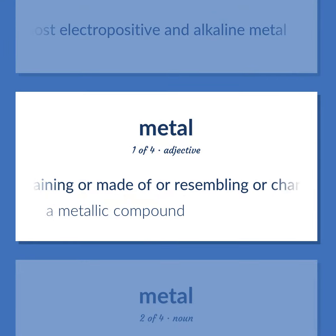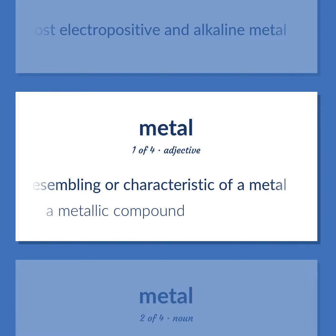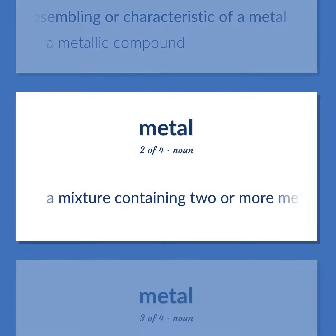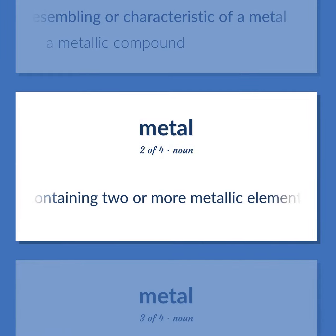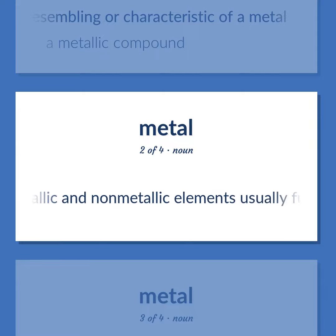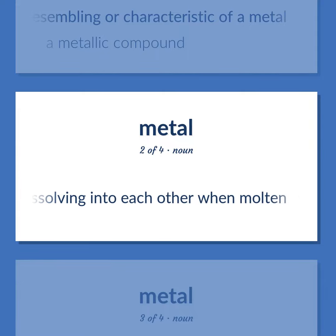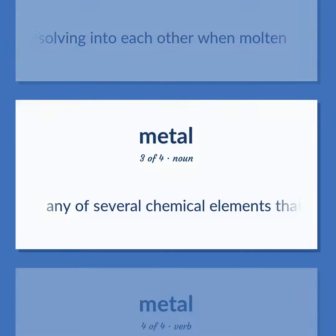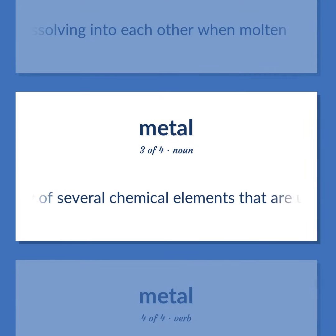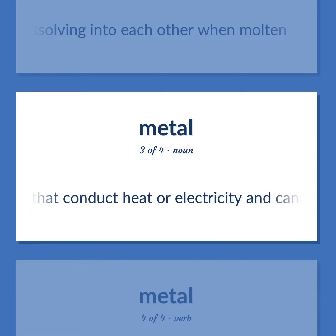Containing or made of or resembling or characteristic of a metal. A metallic compound. A mixture containing two or more metallic elements, or metallic and non-metallic elements, usually fused together or dissolving into each other when molten. Any of several chemical elements that are usually shiny solids that conduct heat or electricity and can be formed into sheets.